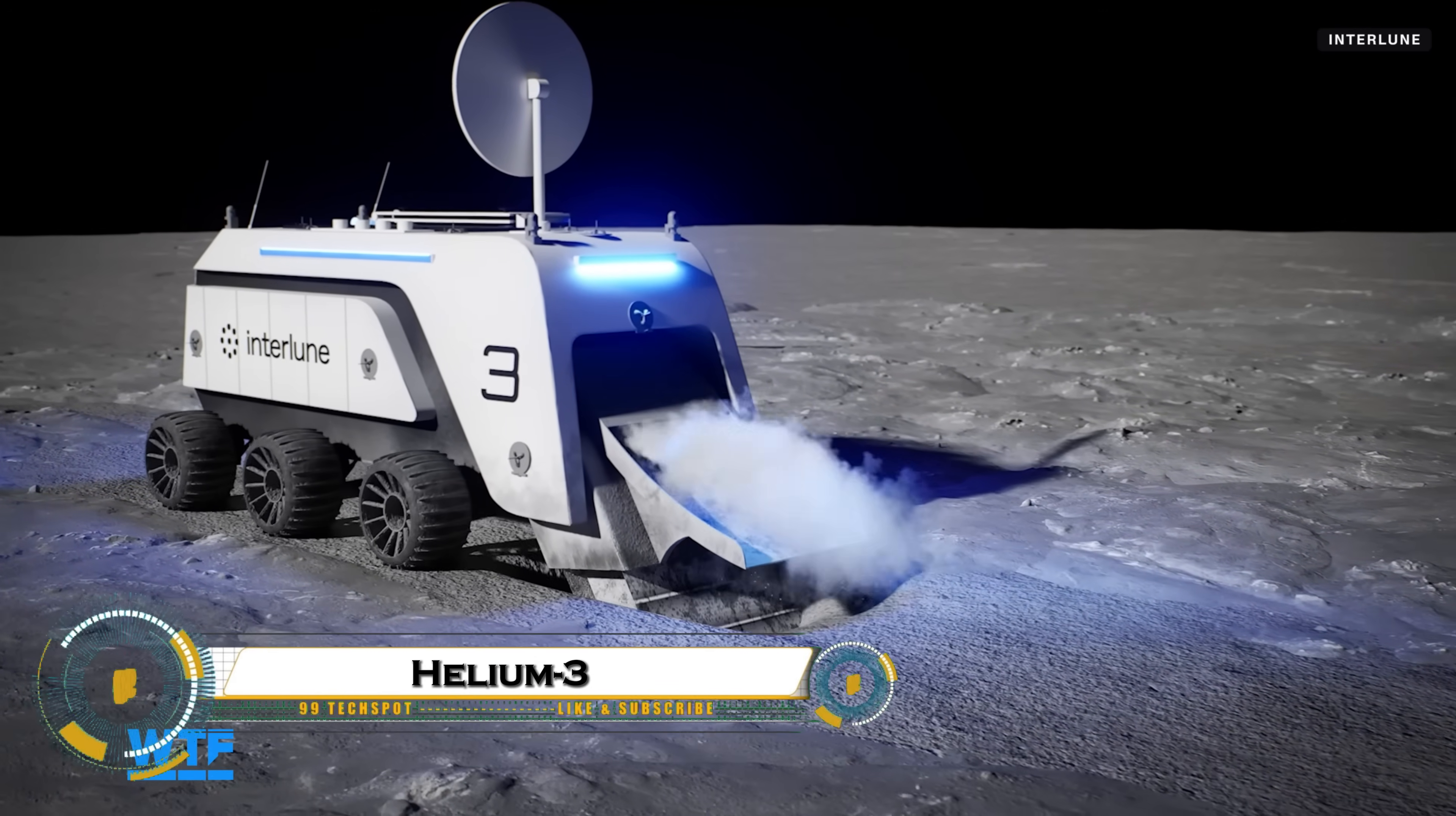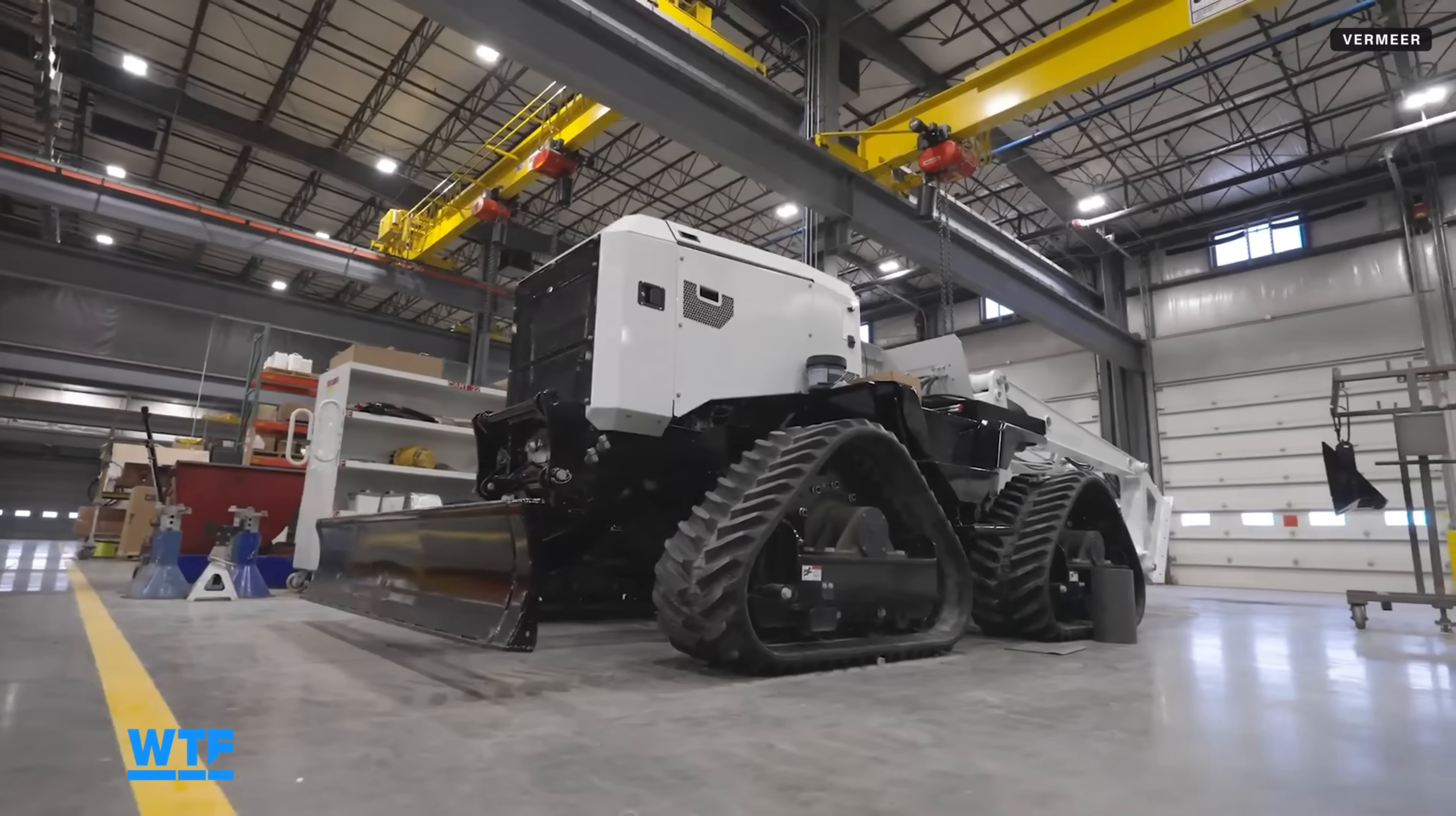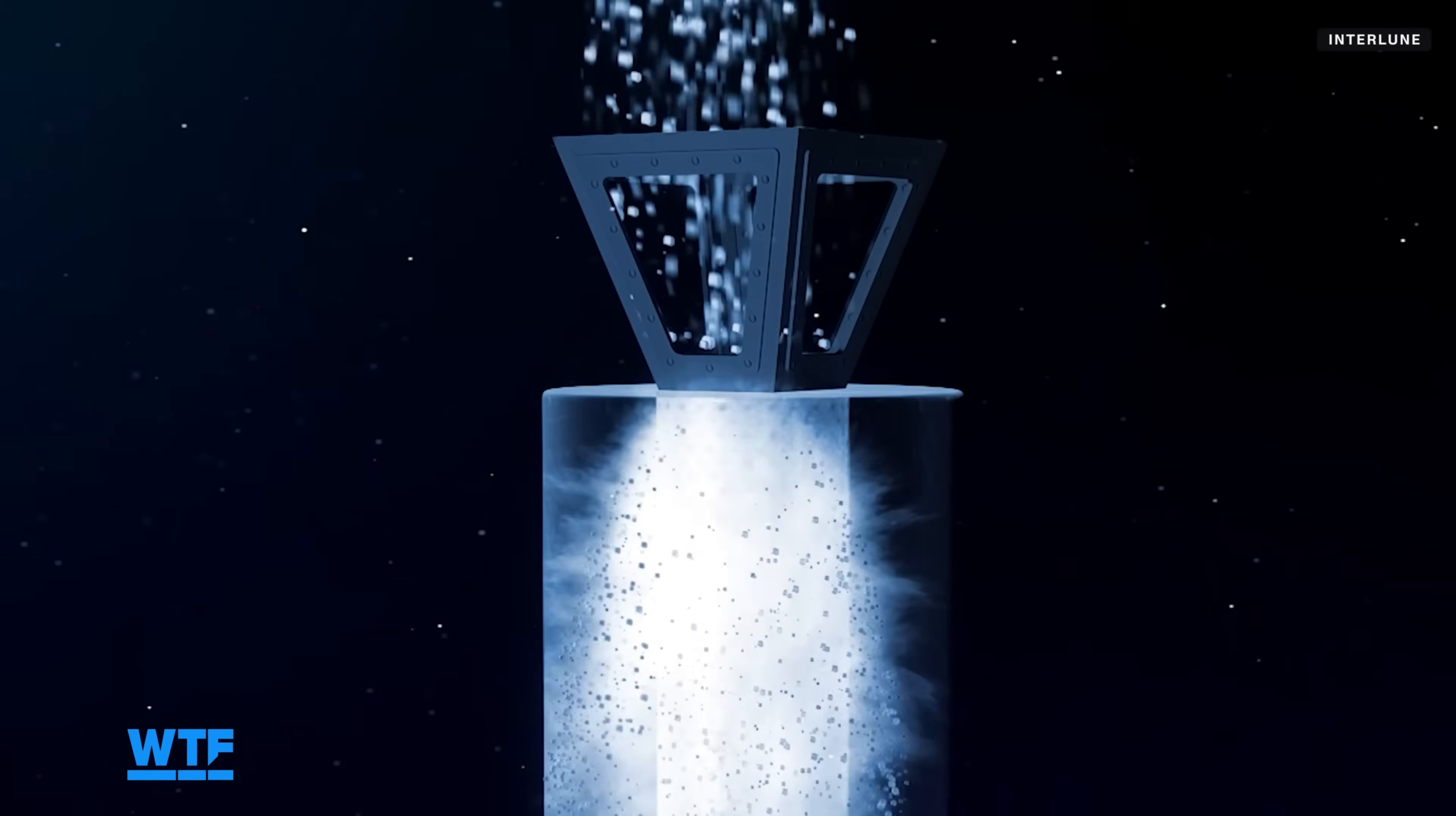Helium-3 is a rare isotope on the lunar surface, deposited by billions of years of solar wind, and holds huge promise for future clean energy. Mining it is a massive challenge. Researchers estimate you would need to process hundreds of thousands of tons of moon dust to extract just a few grams of helium-3.